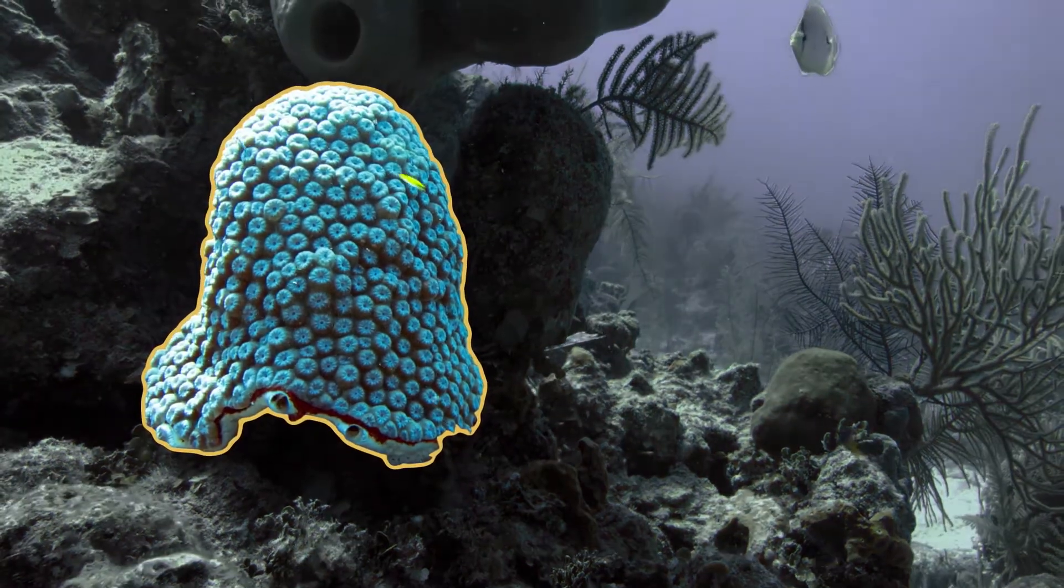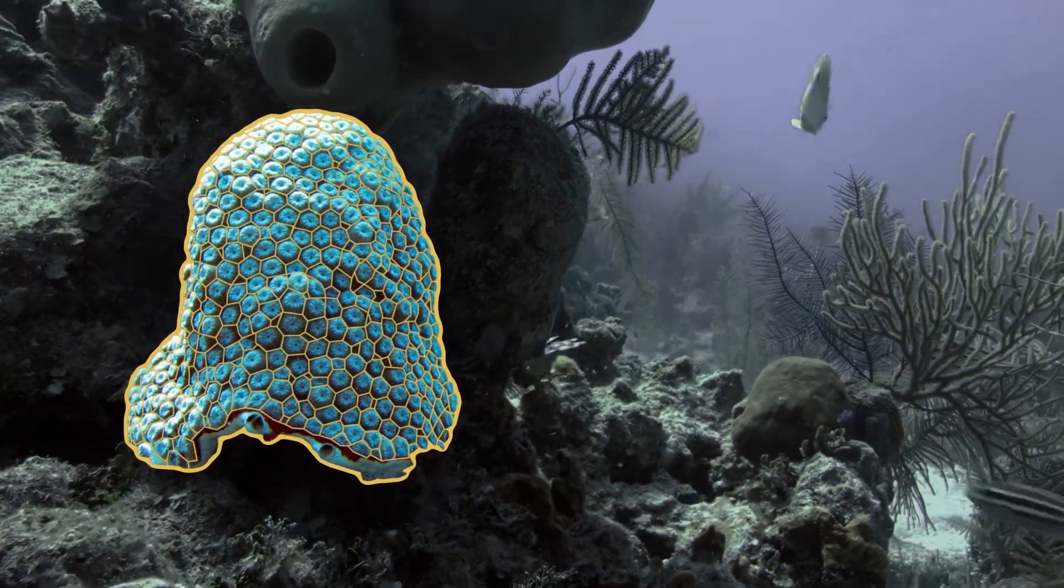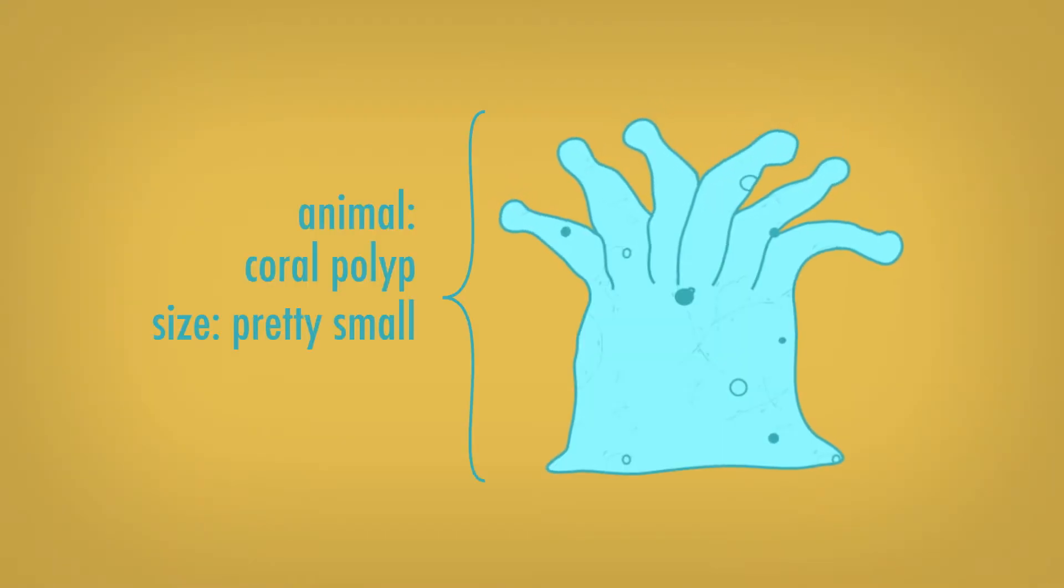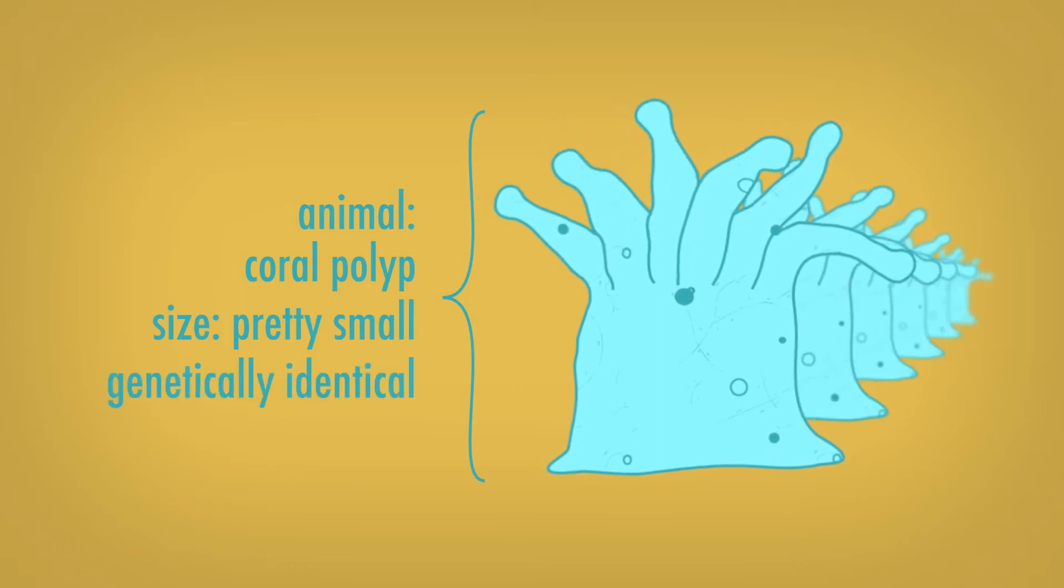Now, you may already know that each head of coral is actually a colony of thousands of tiny animals called polyps, which look something like this. But even though they're separate animals, all of the polyps on a single head of coral are actually genetically identical, like human identical twins.